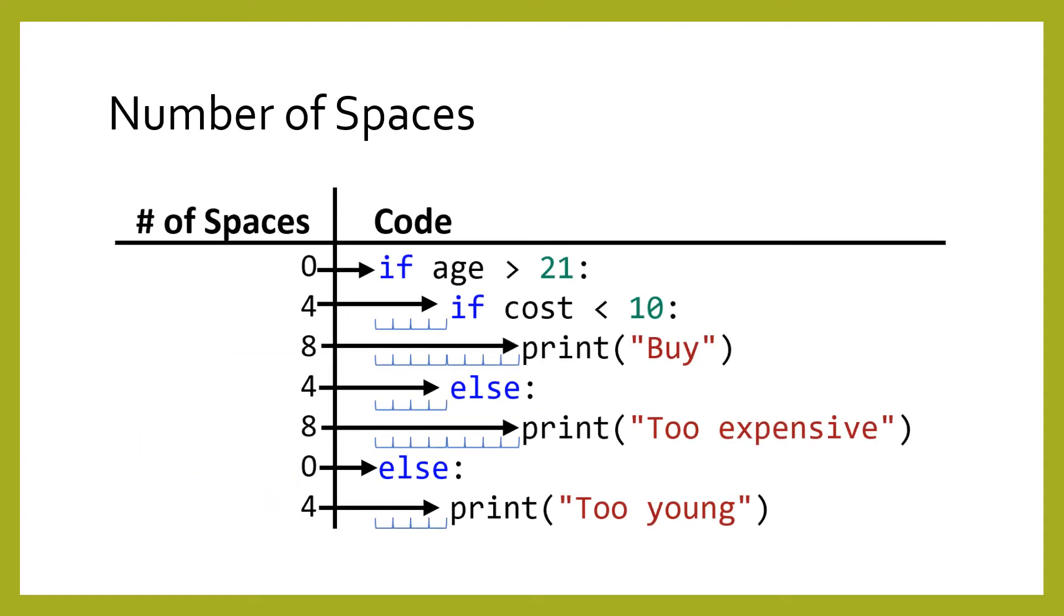Every time you nest a block of statements inside another block, the body of the block gets indented another four spaces. Observe the Python code on the right and the numbers on the left. Each level of nesting increases the number of space characters by four. These are called the whitespace rules, and they can be confusing, but they are consistent. The amount of whitespace controls what code is in what body.